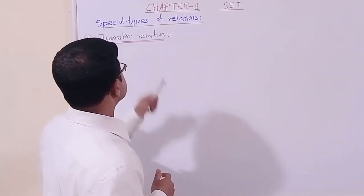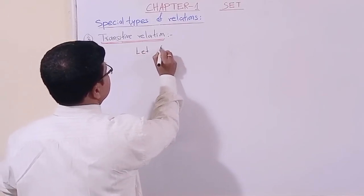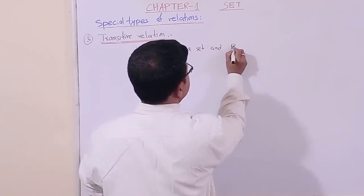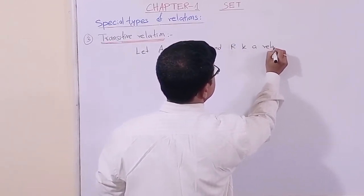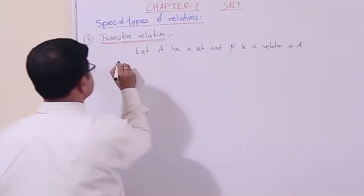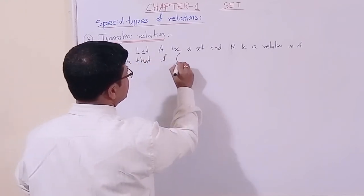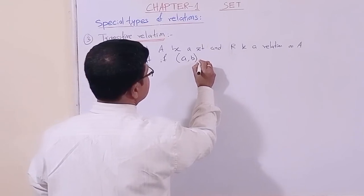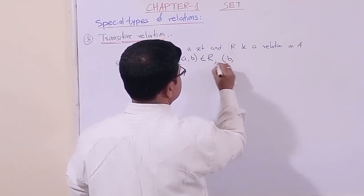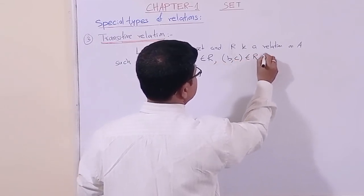Now, dear students, we are discussing transitive relation. Let A be a set and R be a relation on A such that if (a, b) belongs to R and (b, c) belongs to R, then (a, c) must also belong to R. The second element of the first pair and the first element of the second pair must be the same.